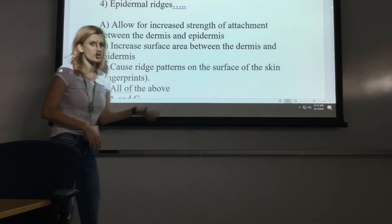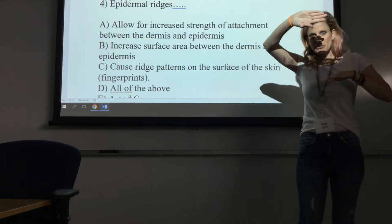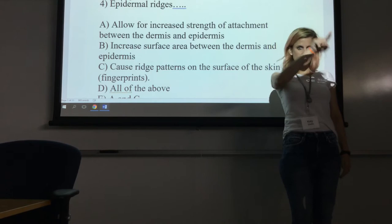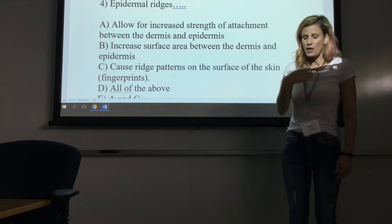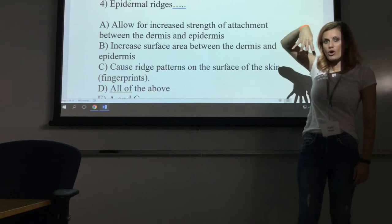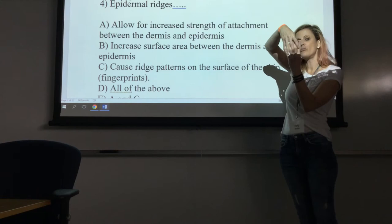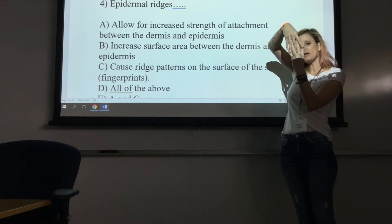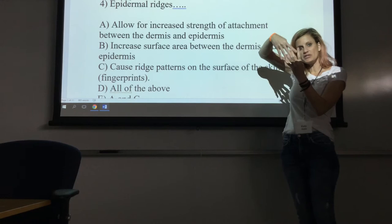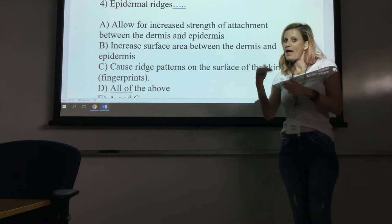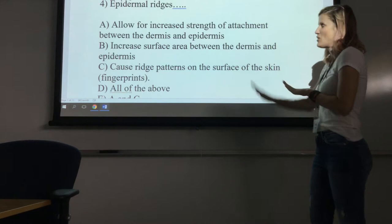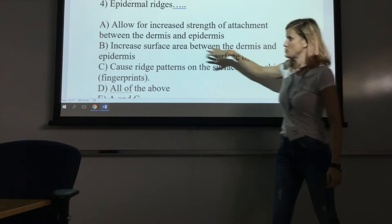Epidermal ridges — think about this before looking at the choices. The line between the epidermis and dermis is not straight. There are curves because there are projections of the epidermis that reach down, called epidermal ridges, and parts of the dermis that go up, called dermal papillae. These interlock, creating that curvy line and increasing surface area. That increased surface area means more hemidesmosomes — like little staples — to hold the two layers together, allowing for increased strength of attachment between the dermis and epidermis.